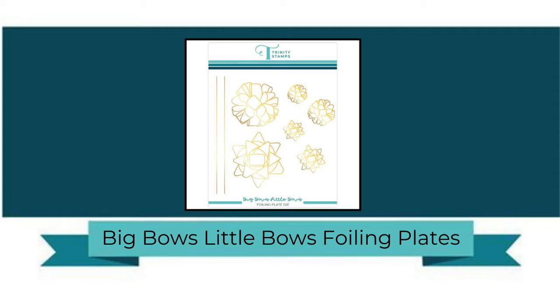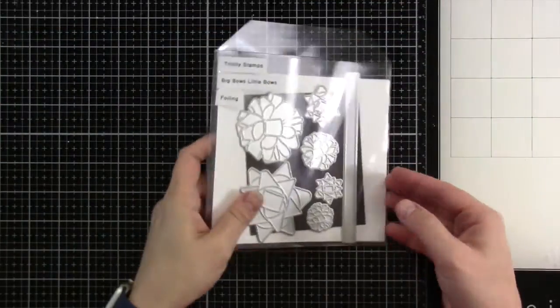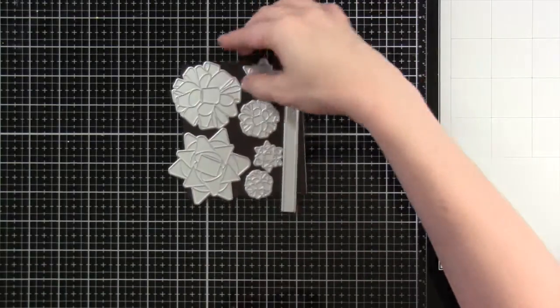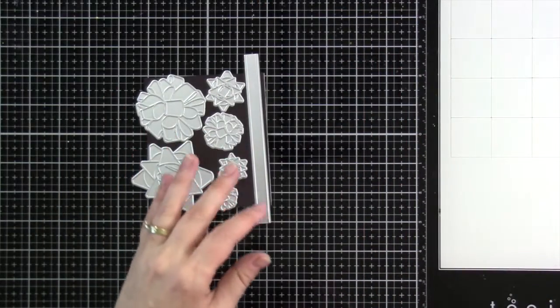Today we're going to be taking a closer look at the Big Bows Little Bows Foiling Plates. This hot foil plate set contains a total of six bows as well as an outline ribbon image.